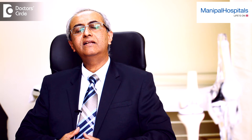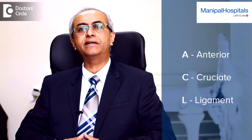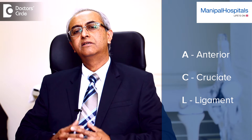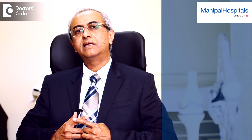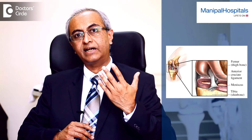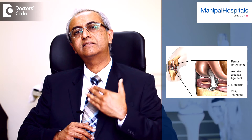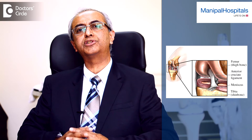ACL is short for Anterior Cruciate Ligament. To give a little background, there are two cross ligaments inside the knee. The ACL is the Anterior Cruciate Ligament at the front of the cross, and the PCL is the Posterior Cruciate Ligament at the back of the cross.